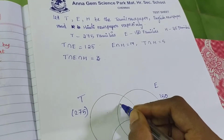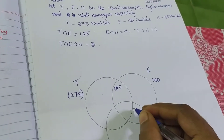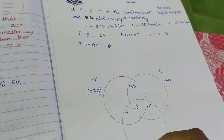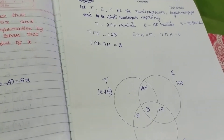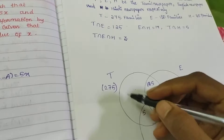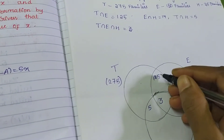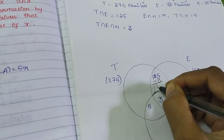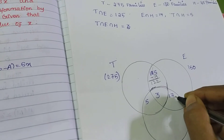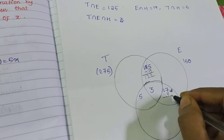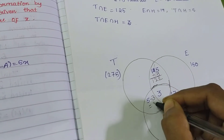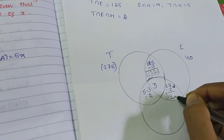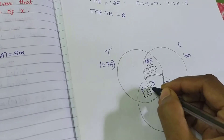Tamil is 275, English is 150, Hindi is 45 families. T∩E is 125, E∩H is 17, T∩H is 5. The common part for all three is 3. To find the intersection-only parts: T∩E only = 125 minus 3 = 122. E∩H only = 17 minus 3 = 14. T∩H only = 5 minus 3 = 2. These are the values for each pairwise intersection alone, and 3 is for the triple intersection.